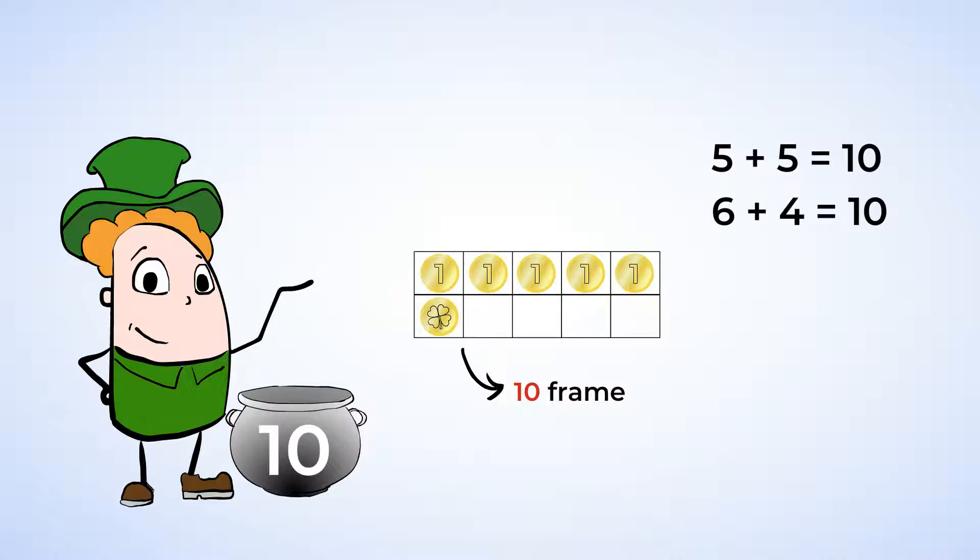And wow, look at this. This pot has seven gold coins. How many boxes do we need to fill to make ten? You might be able to tell just by looking at the ten frames, but we can also count to be sure. One, two, three. Seven gold coins plus three gold coins makes ten gold coins. Let's write a number sentence for that. Seven plus three equals ten.